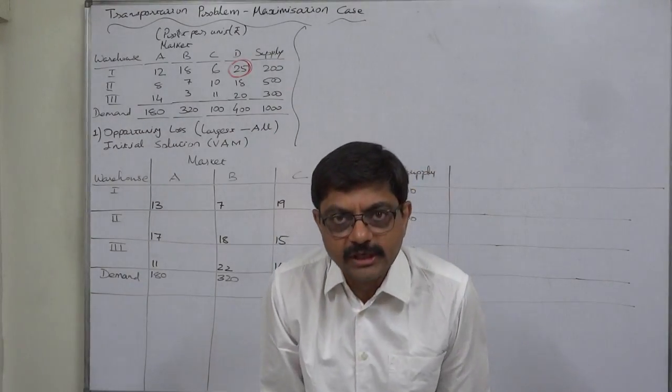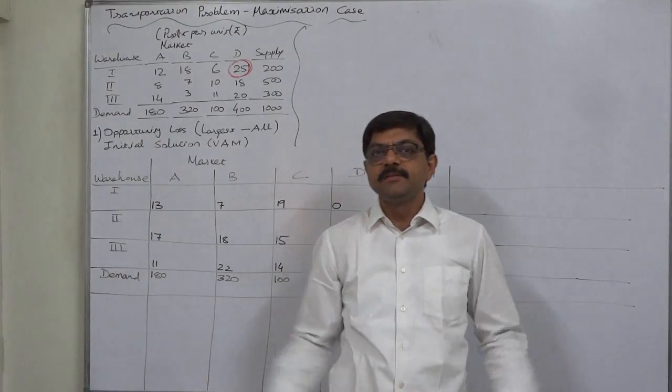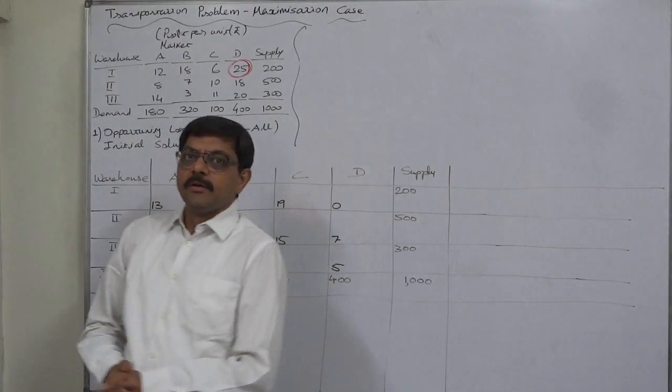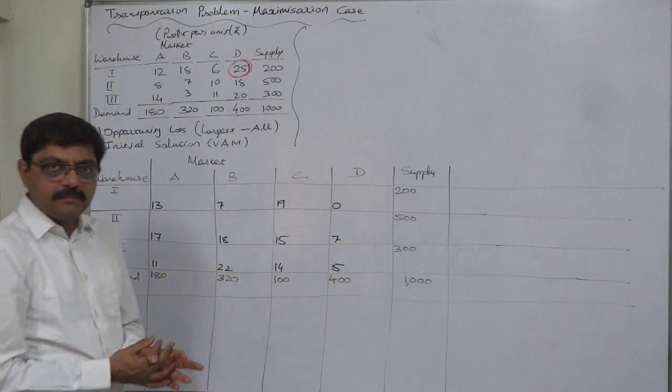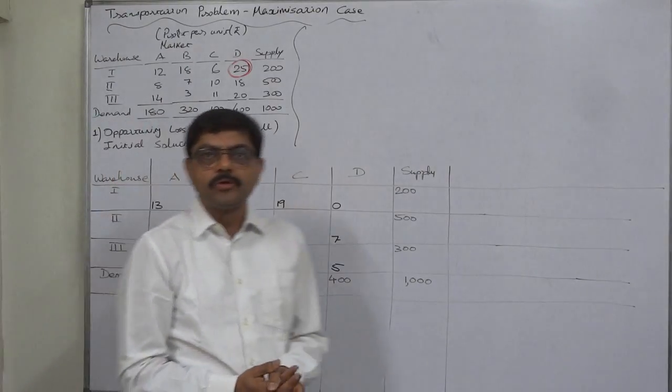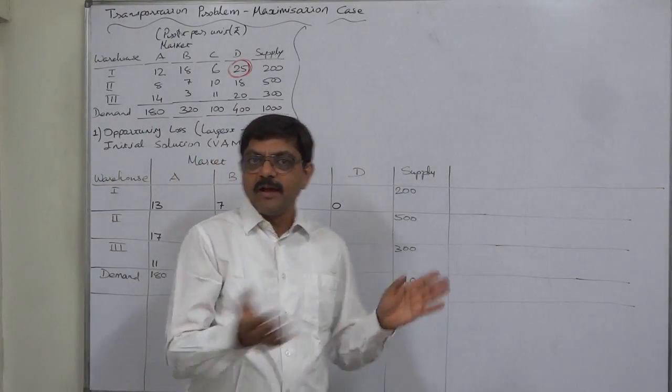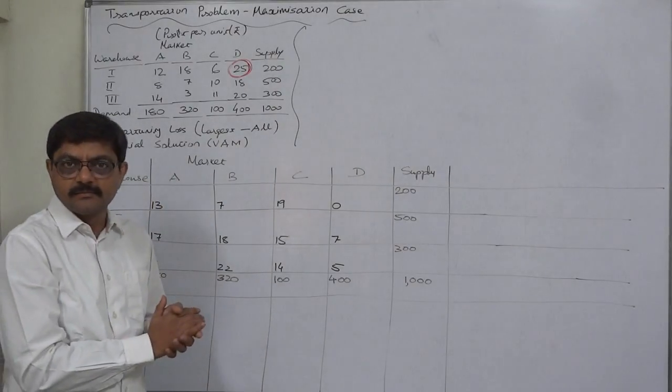And in case of opportunity loss, our objective is minimization. Profit can be maximum if the opportunity loss is minimum. So now this has become a minimization problem.